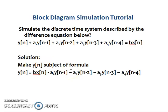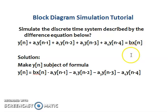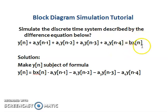Now we have a more complex example: simulate the discrete time system described by the difference equation y(n) + a1·y(n-1) + a2·y(n-2) + a3·y(n-3) + a4·y(n-4) = b·x(n). The past outputs are scaled by a1, a2, a3, and a4, and b·x(n) is the current input scaled by b. Making y(n) the subject of formula, we obtain the rearranged expression.